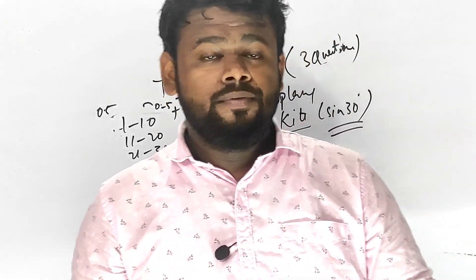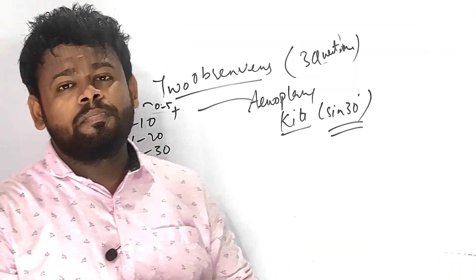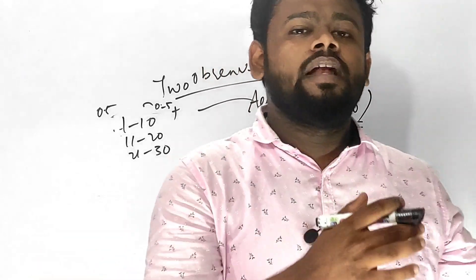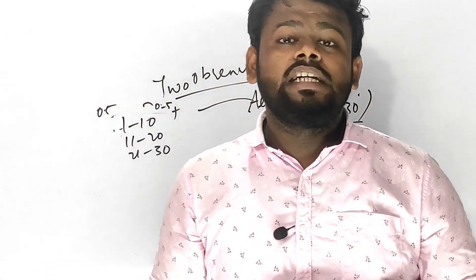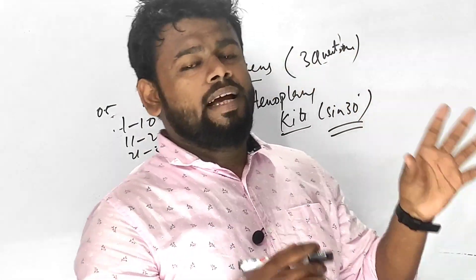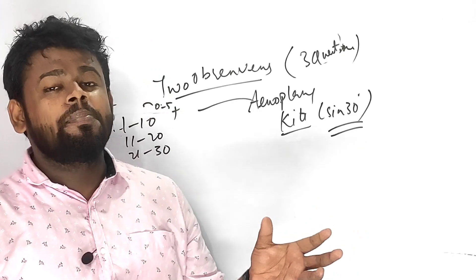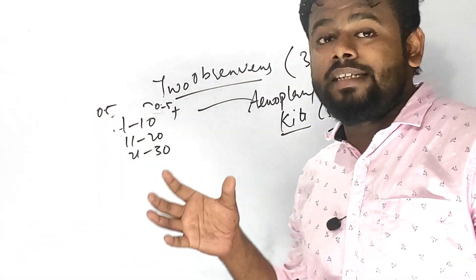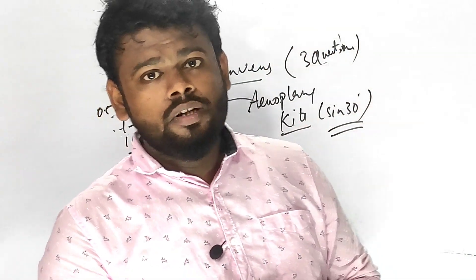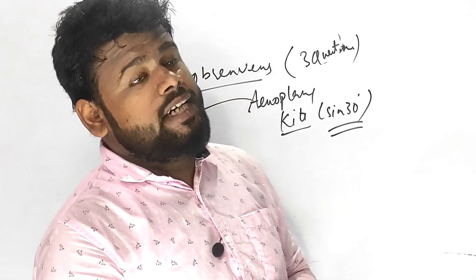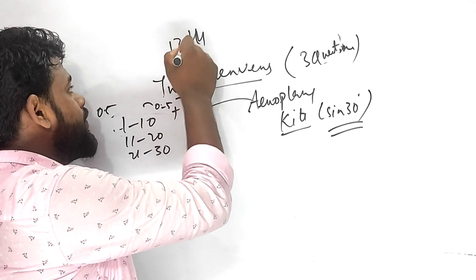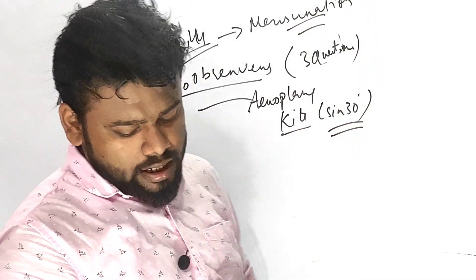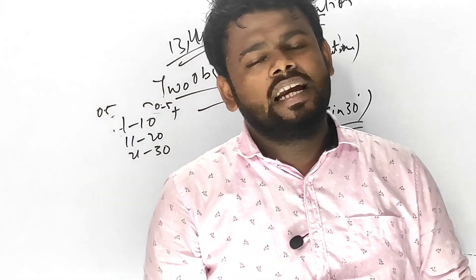Coming to Mensuration: if you are following Concise Selina, please do the examples — especially the ratio-based conical tent problem. If you are following RS Aggarwal, ML Aggarwal, or Goyal Brothers, please see the ratio-based conical tent problem. That is very important. In Concise Selina, Exercise 20A and 20B — around questions 13 to 14 — focus on mensuration where volume is given, area is given, and you need to find radius or height.